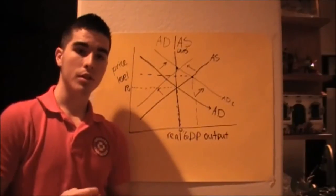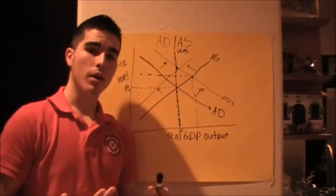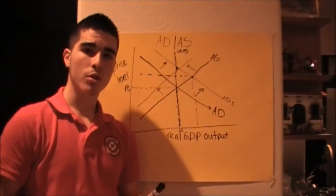Monetary expansionary policy would be to buy bonds, lower the discount rate, and lower the reserve ratio.